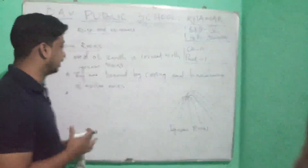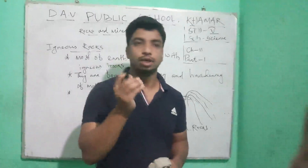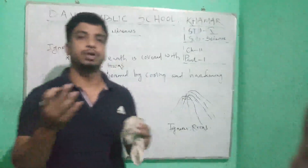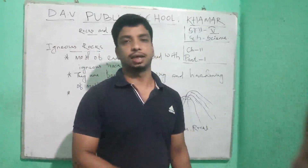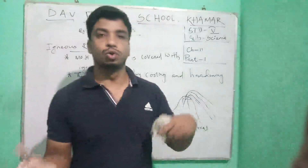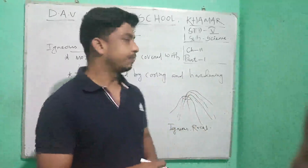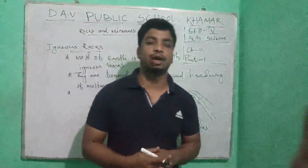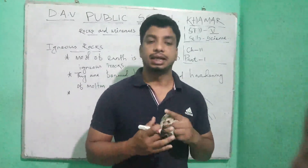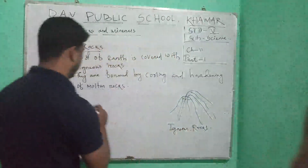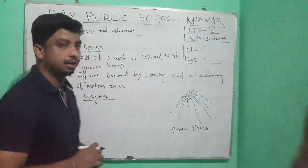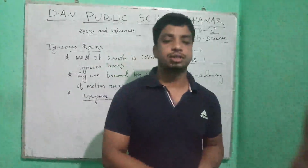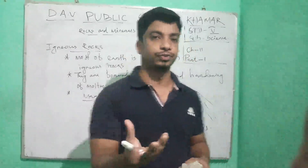Igneous rocks are formed by the cooling and hardening of molten rocks. Molten means the rock that has melted underground. The molten rock inside the Earth is called magma. Magma is found in the innermost layer of the Earth and is pushed upward by pressure.